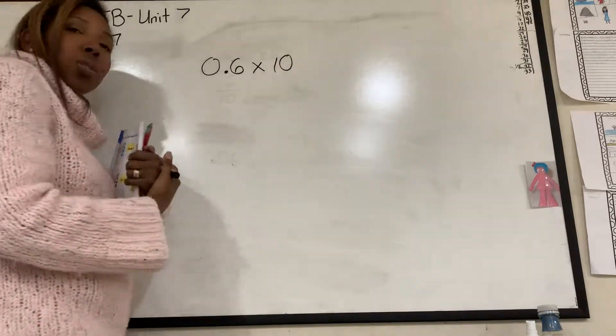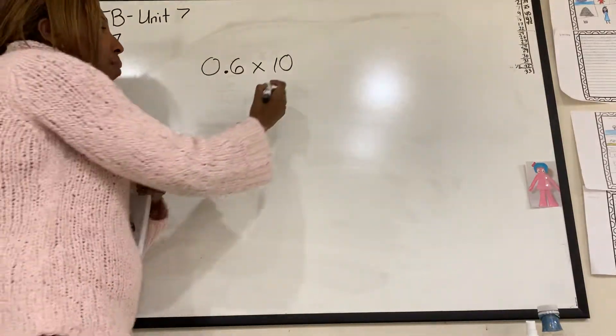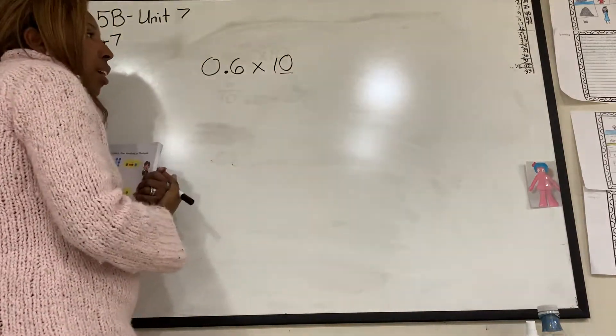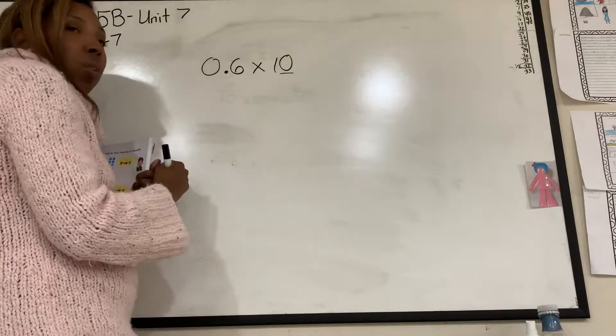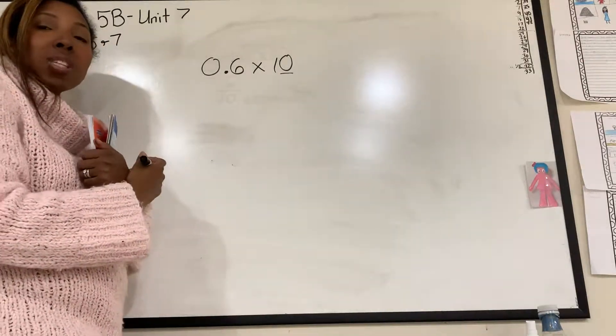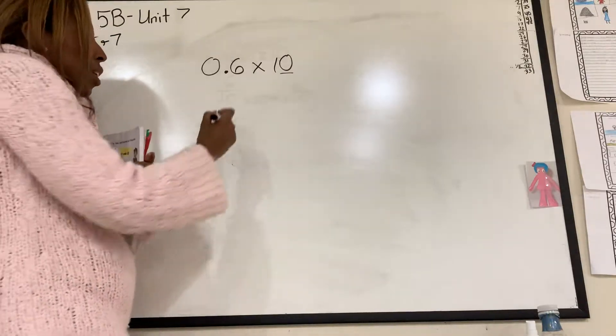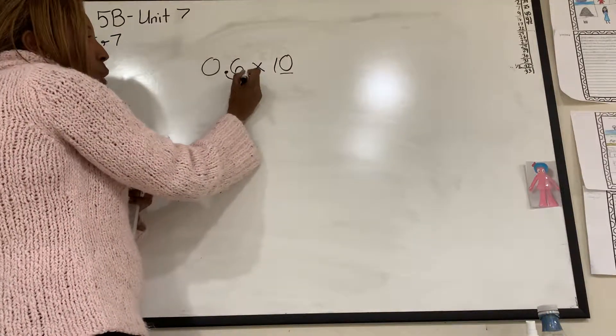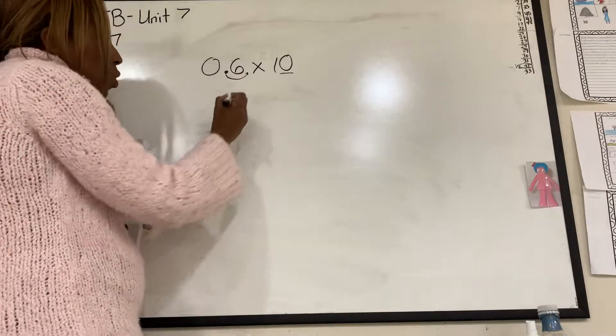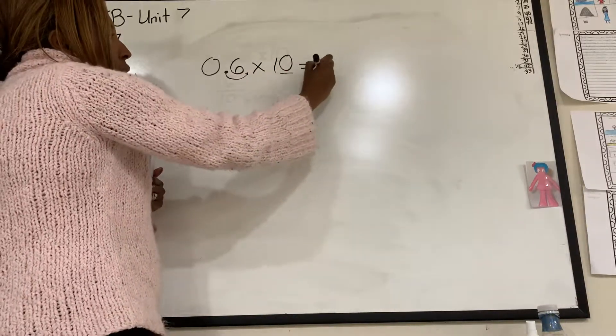And all you need to do with these type of problems is count how many zeros that you see. I see one zero. So that means that my number is going to get bigger and I'm going to move the decimal one spot. So my 0.6 is going to make it go that way and it's going to change into 6.